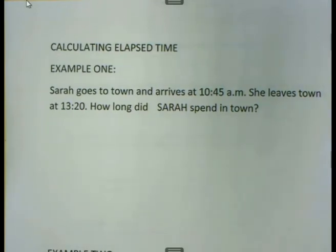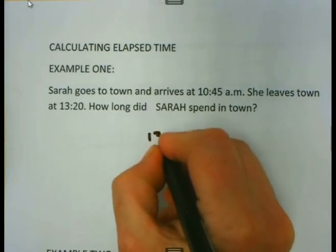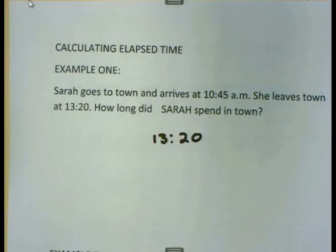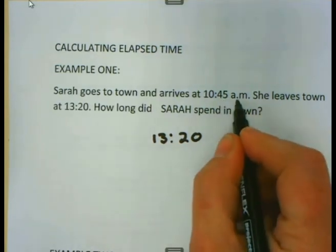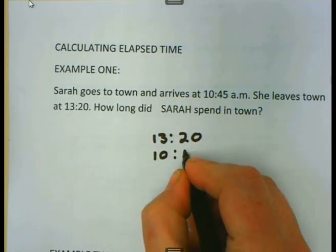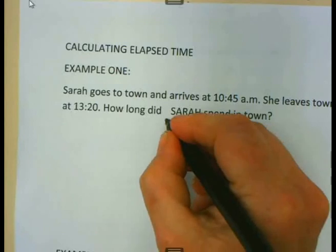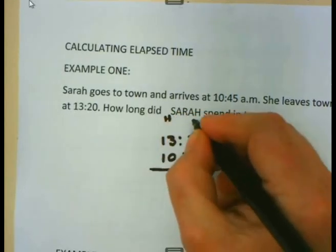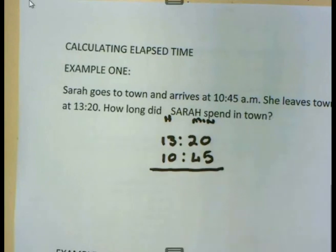What we do is, we write down the later time. The later time in this case is 20 minutes past 1. And then we subtract from it the earlier time, which is in this case 10:45 a.m. Here I have my hours and here I have my minutes.